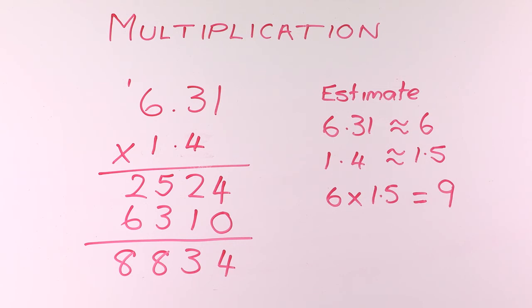We do our multiplication. 1 times 1 is 1. 1 times 3 is 3. And 1 times 6 is 6. We now do our addition. 4 plus 0 is 4. 2 plus 1 is 3. 5 plus 3 is 8. And 2 plus 6 is 8.